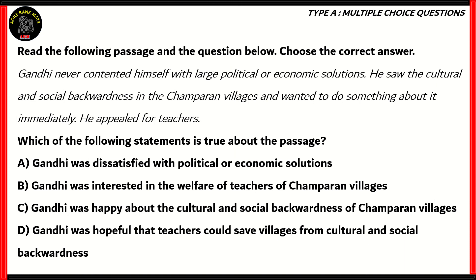Let's look at the next question. This is again a passage-type question. Read the following passage and choose the correct answer. 'Gandhi never contented himself with large political or economic solutions. He saw the cultural and social backwardness in the Champaran villages and wanted to do something about it immediately. He appealed for teachers.' We need to find out which of the following statements is true about the passage. This is an extract from the chapter 'Indigo' from Vistas.